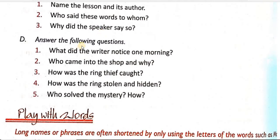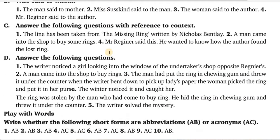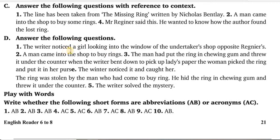Part D hai hamaara: answer the following questions. Hame long question answers karne hai. Usko hum next page pe likhenge. Question number one note down karenge: what did the writer notice one morning? Ek din writer ne morning mein kya notice kiya? The writer noticed a girl looking into the window of an undertaker's shop opposite Regnier's. Ek ladki window ke andar se dekh rahi thi, jahan pe Regnier's ka office tha uske opposite side.